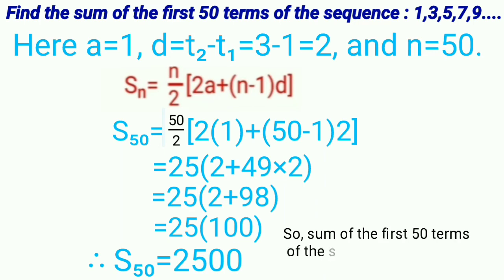So, sum of the first 50 terms of this sequence, 1, 3, 5, 7, 9, is 2,500.